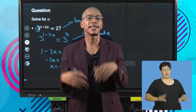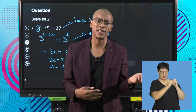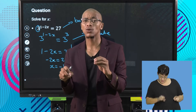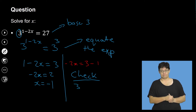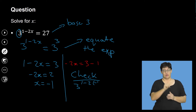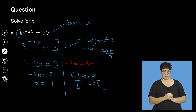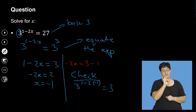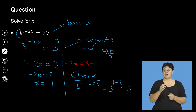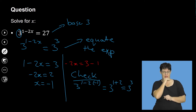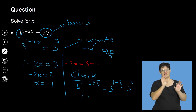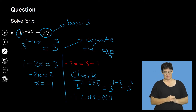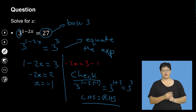You check by taking the answer you got and substituting it — you don't rewrite the whole exam. For example 1, substituting x equals negative 1: 3 to the exponent of 1 minus 2 times negative 1 equals 3 to the exponent of 1 plus 2, which is 3 to the exponent of 3, which is 27. The right-hand side is 27. Left-hand side equals right-hand side — my answer is correct.